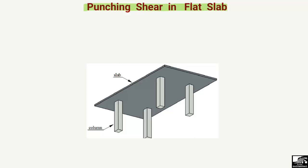First, let's define the flat slab. A flat slab is a type of slab which is only supported by the columns. In this type of slab we don't provide any beams — it is only supported by the columns, which are the vertical members. Such a type of slab is known as the flat slab.